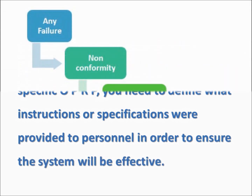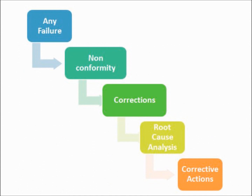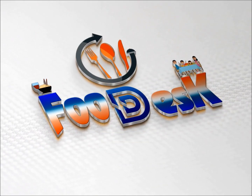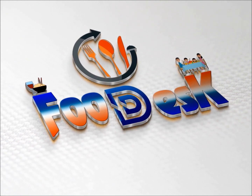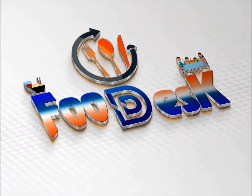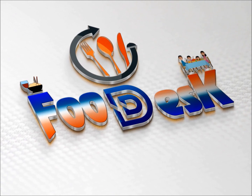At this point, any failure will be considered a non-conformity and you must follow it up by establishing immediate corrections, retaining unsafe products under control, analyzing the cause, and implementing corrections. We hope that this session will help you get an idea of how to develop a decision tree for ISO 22000:2018.